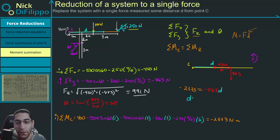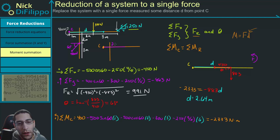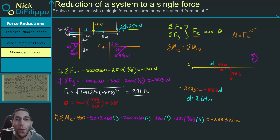This offset distance is equal to 2.64 meters. This means we can replace this entire system with a single force that is 2.64 meters away from point C, acts at a 63 degree angle, and has a magnitude of 991 newtons. So we can replace all of this with a single force in that configuration. If this video was helpful, please consider liking and subscribing — it helps my channel reach a wider audience. Thank you.